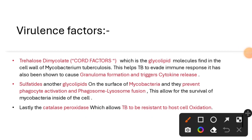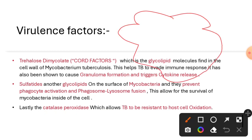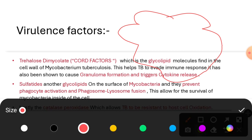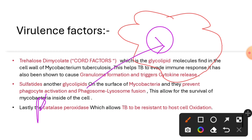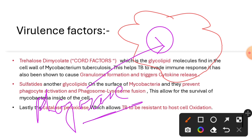As mentioned in the previous video, the initial target for MTB — that is Mycobacterium tuberculosis — is our macrophages. There is a special chamber inside the macrophage that is known as the phagosome. Whenever a macrophage engulfs something, it will be enclosed inside the phagosome.